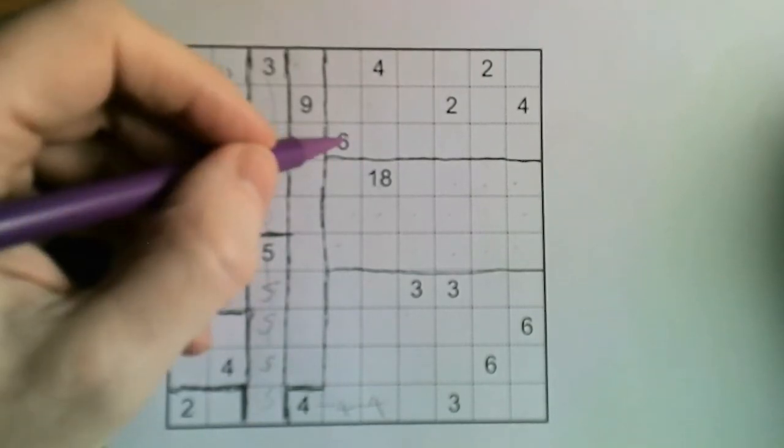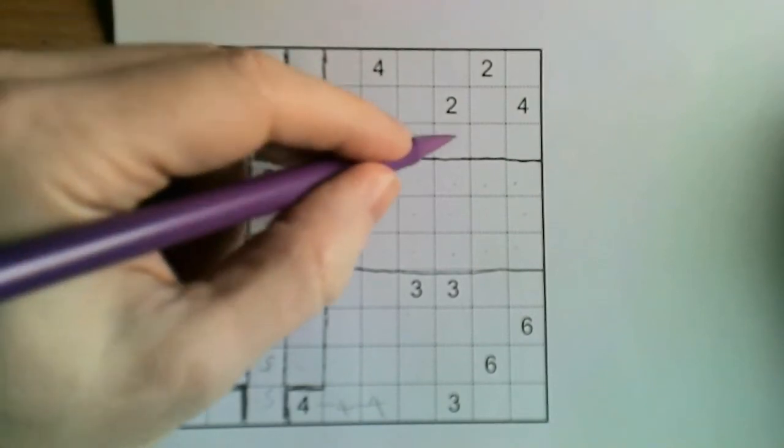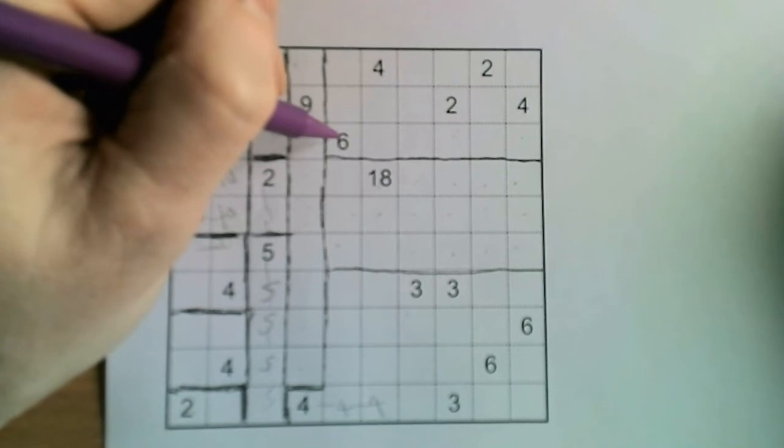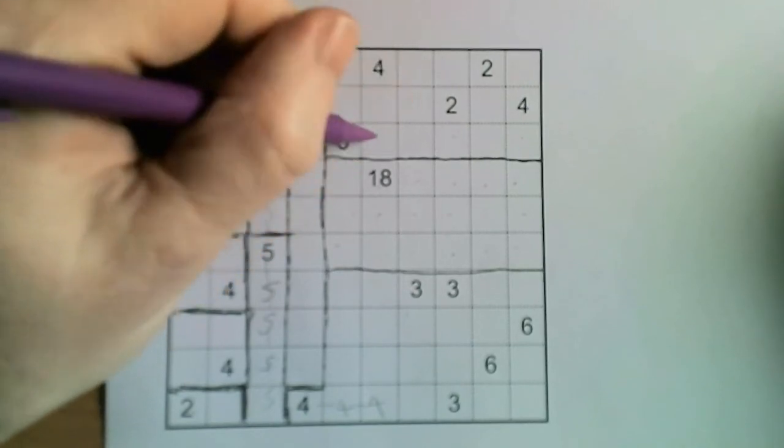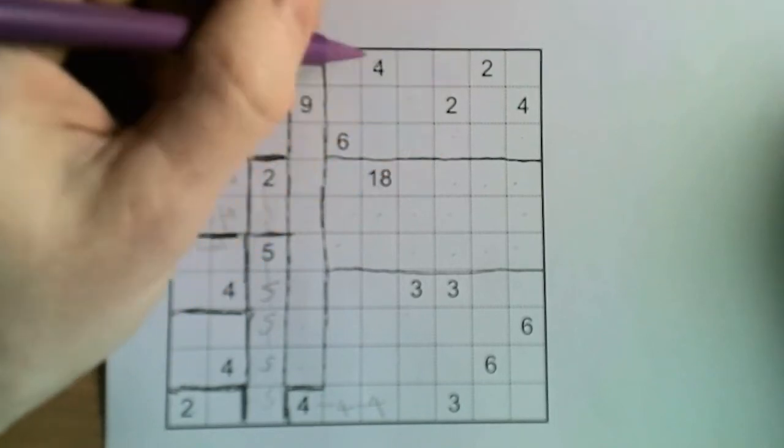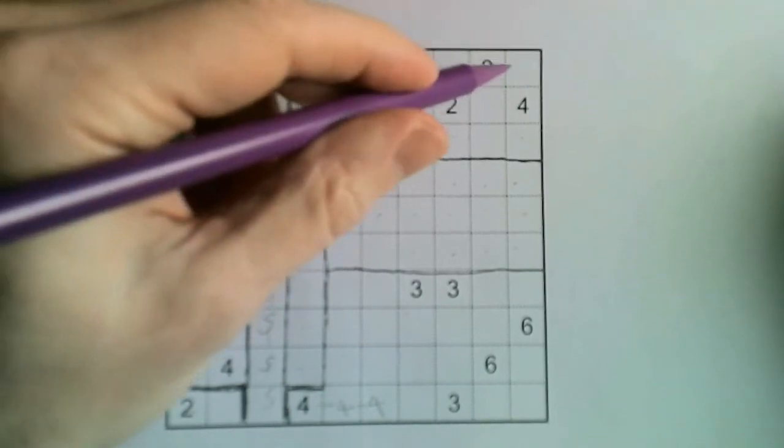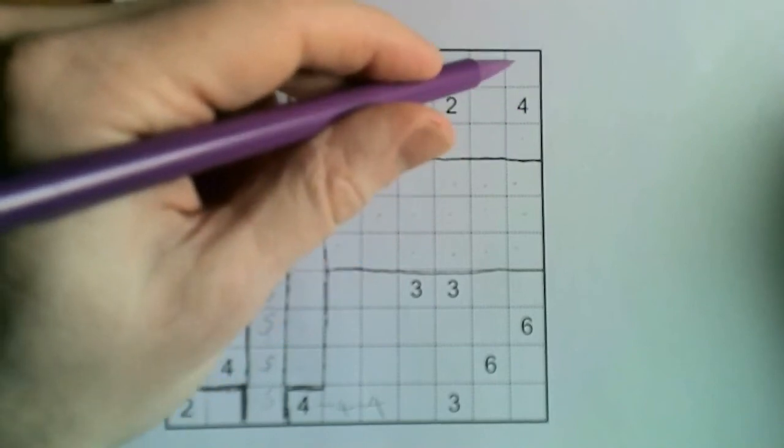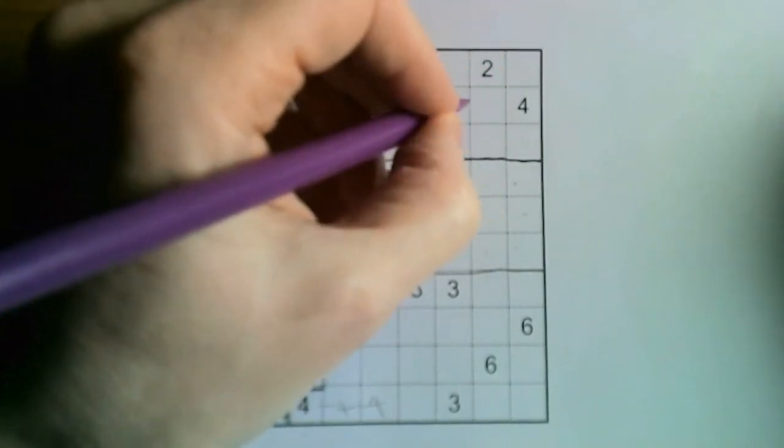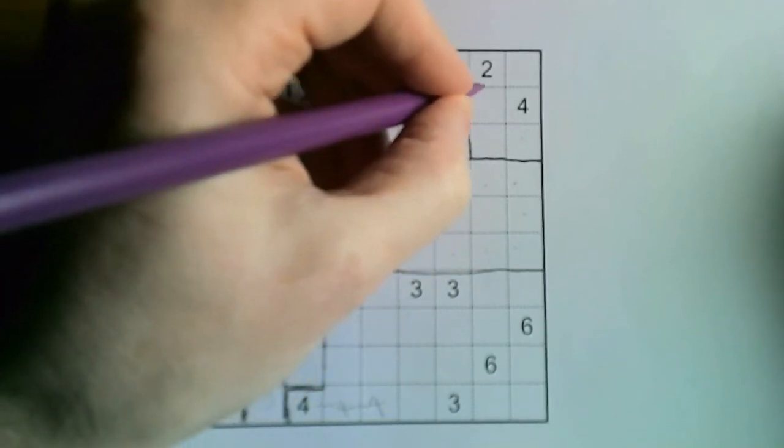So let's have a look at this 6. And 1, 2, 3, 4, 5, 6. Okay, so that could be 6 by 1 currently, or it could be 2 by 3. This 4 could be 4 by 1, or 2 by 2. This 4 can't be 4 by 1 because there's only 3 squares. So therefore this 4 must come across like this.